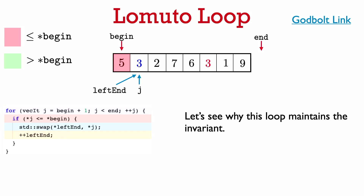Here's the code for the loop in the Lomuto algorithm, which you can see working at the Godbolt link given in the top-right corner of the slide. We'll work through the code on an example to get a feeling for what the loop does. As we go through the example, think about why the loop maintains the invariant — the maintenance condition is usually the toughest thing to check.